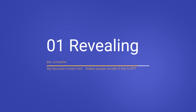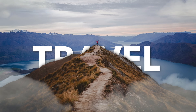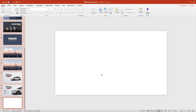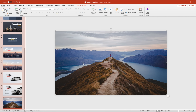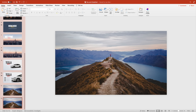Number one — Revealing. My favorite Morph trick. It really makes people wonder if it is PowerPoint if you do it right. Let's look at the example — a reveal effect with some clouds coming in that creates a 3D effect on your slide. Start from a picture where you can select some sort of an object in the foreground. It can be a skyline, a mountain, anything with a clear edge. Duplicate the slide.